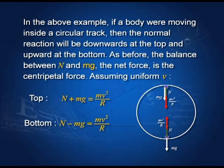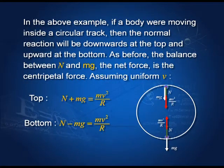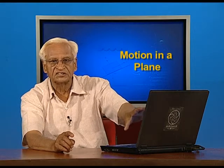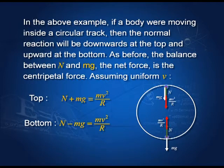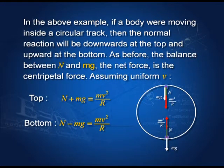These equations are: N + mg = mv²/R and N − mg = mv²/R. Given mv, R, and other parameters, we can calculate the velocity required, the normal reaction, or whatever is needed. The object moving inside a circular track experiences the normal reaction perpendicular to the surface — downwards at the top and upwards at the bottom — with the centripetal force direction changing accordingly.